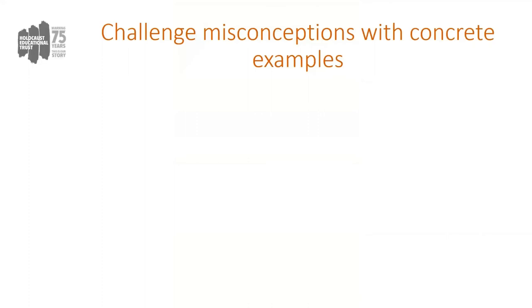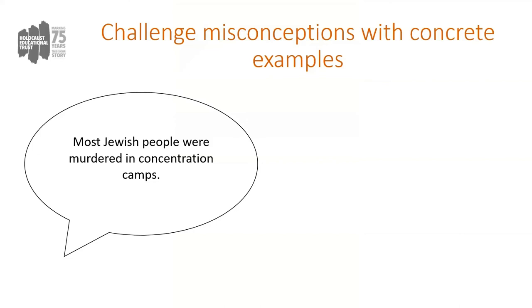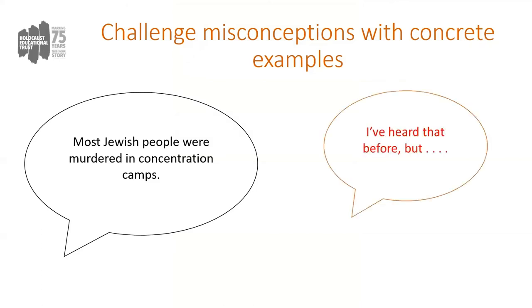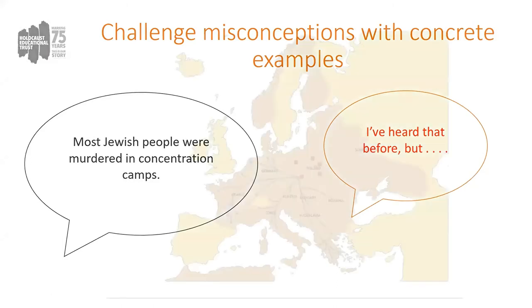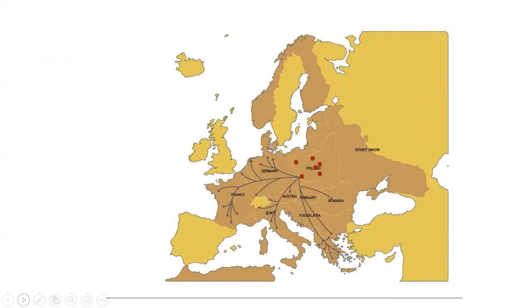Another principle of how to challenge misconceptions rests on the idea of challenging those misconceptions with concrete examples. The Holocaust is so huge we often have to think about it in quite abstract terms, and it's difficult to use an abstraction to challenge a misconception. So we need to challenge them with very specific concrete examples. For example, another misconception is that most Jewish people were murdered in concentration camps. Again, we'd use a phrase that helps us to unpick that a little — 'I've heard that before, but...'